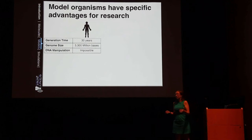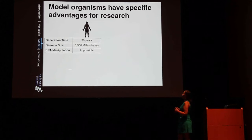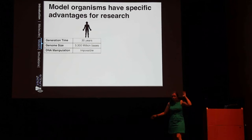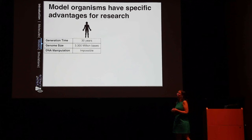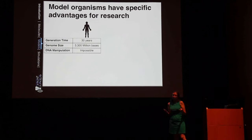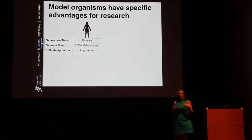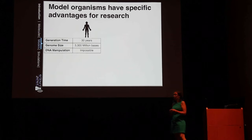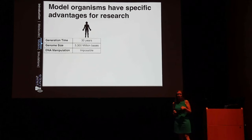We use model organisms because they have specific advantages for doing biological research. The human genome is very large — 3,300 million bases, or 300 feet tall if put into book form — which makes it really hard to work with. Humans are also terrible model organisms for a variety of other reasons, including a long generation time of on average 30 years in the developed world, and a lot of ethical ramifications with doing targeted crosses between individual humans.